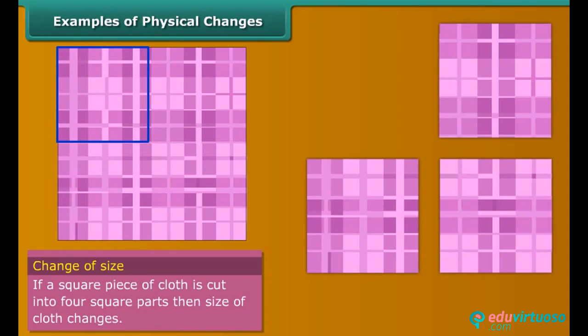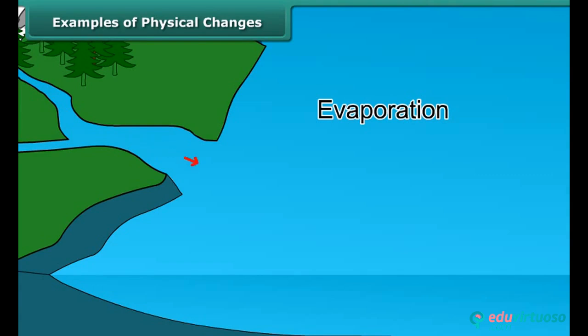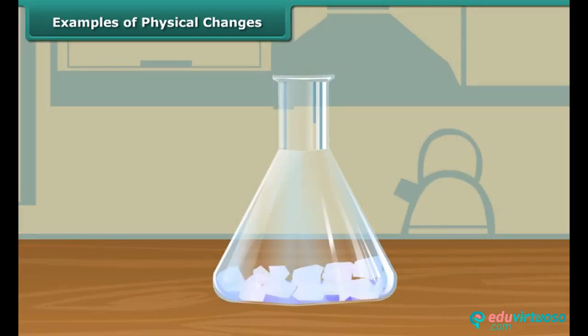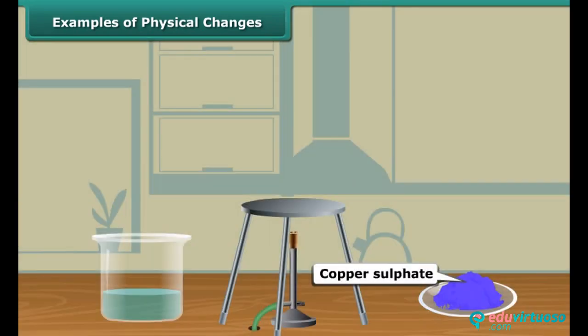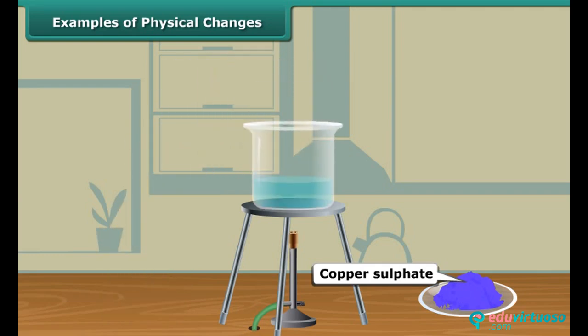Salt can be obtained by the evaporation of sea water, but the salt obtained in this manner is not pure. Pure crystals of salt can be obtained by crystallization. To prepare pure crystals of copper sulfate, take about 100 milliliters of water in a beaker and acidify the water with a few drops of dilute sulfuric acid.